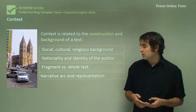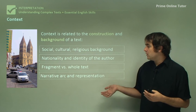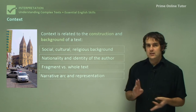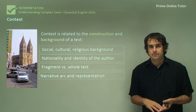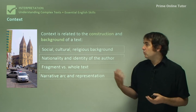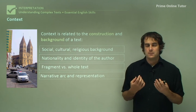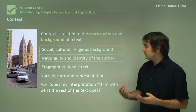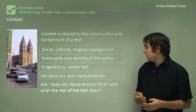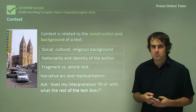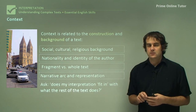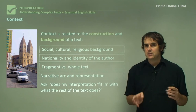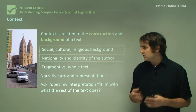Narrative arc and representation is the other consideration — your interpretation needs to follow on and be consistent with the story. You can't interpret something which doesn't really pan out in the story or through its method of representation. You need to ask yourself: does my interpretation fit in with what the rest of the text does? Ask that every time you interpret something and make sure that it does. Because if it doesn't, it's going to make it very difficult to construct a strong case — your argument is going to be all over the place, it's going to contradict itself, and ultimately it's not going to address what the question is asking.